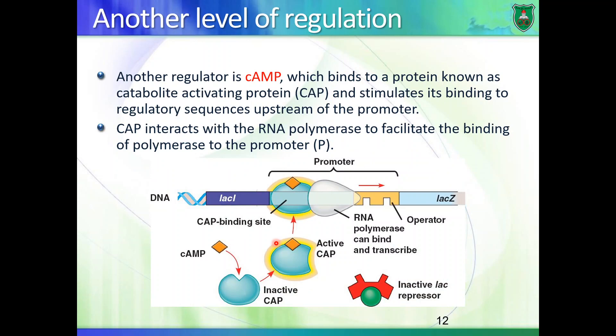There is another level of regulation mediated by the molecule cyclic AMP. Cyclic AMP is a small molecule produced from ATP — adenosine triphosphate. It has one phosphate and a cyclic structure, hence called cyclic AMP. This cyclic AMP binds to another protein known as CAP, or catabolite activating protein.